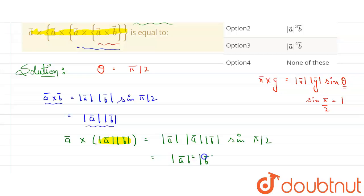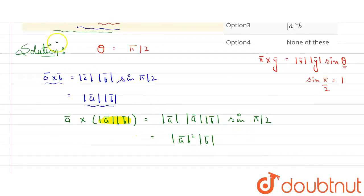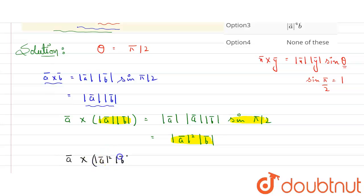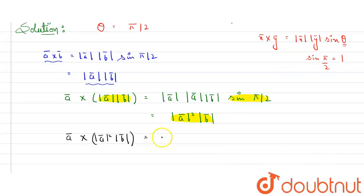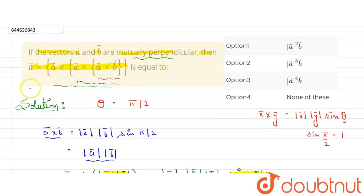Now crossing this result with a again: the angle is again 90 degrees, so we write a cross (|a|² × |b|). This gives magnitude of a times |a|² times |b|, and since sine will be 1, we get magnitude of a cubed times vector b.